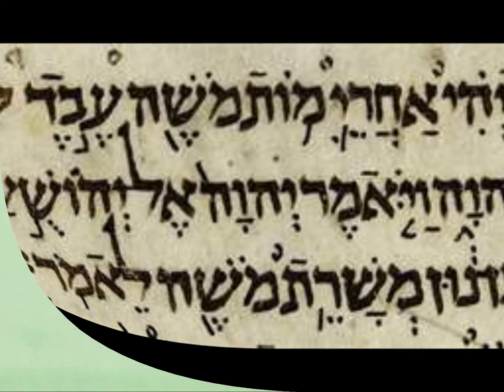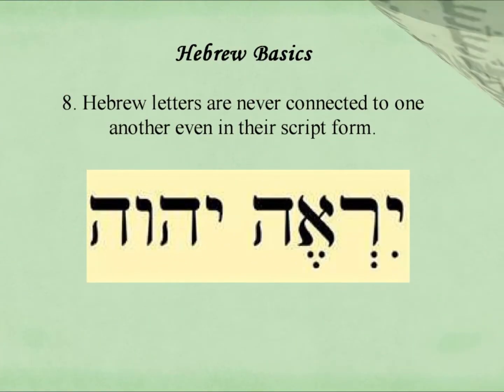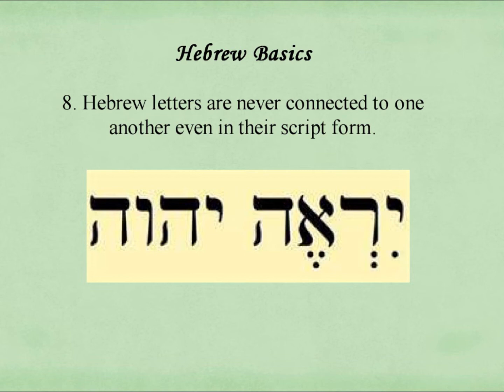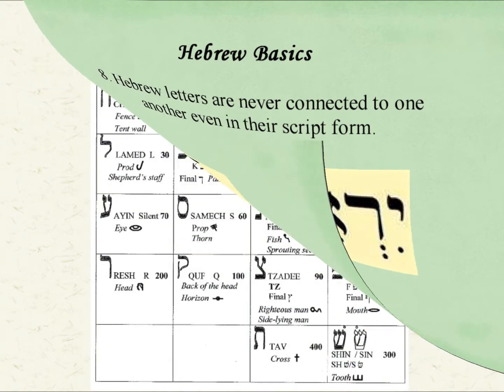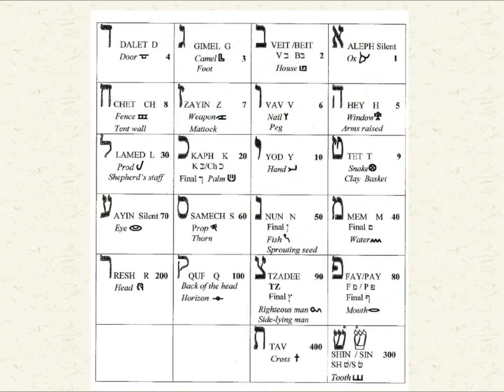Number eight: Hebrew letters are never connected to one another, even in their script form. On the following screen, you will see a chart giving you the name of a letter, the letter sound, the letter meaning, the ancient symbol or pictograph, and the numerical value of that letter.